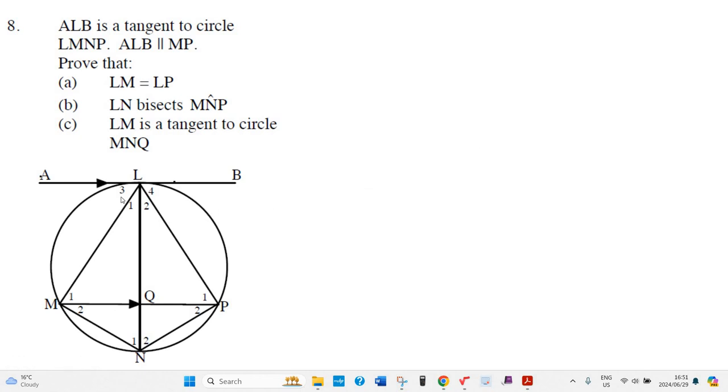Okay, we've got here that ALB is tangent to the circle LMNP, with that quadrilateral there and those triangles all over the place.